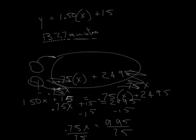So, actually, 13.27 would actually be 14, because they don't charge you in decimal minutes. As soon as you hit 13 point something, they go up to the next minute. So, 14 minutes.